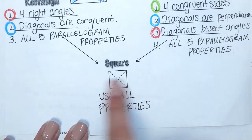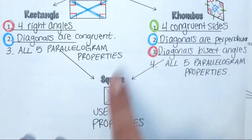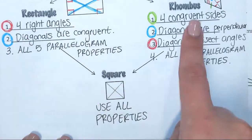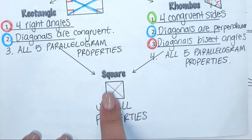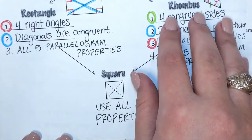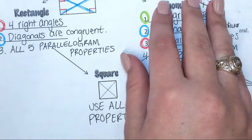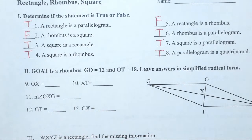Because on a square you're able to use every single property of everything we wrote above. On a rhombus — is a rhombus allowed to use rectangle properties? No. So a rhombus couldn't be a square because a square has other properties that a rhombus can't use. But the other way around, a square would be a rhombus because it can use its properties. So whenever you're trying to decide on these true-falses, think about: can I use these properties? Are they using the same properties as this other shape?